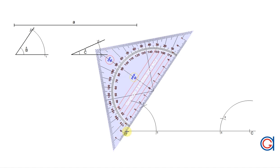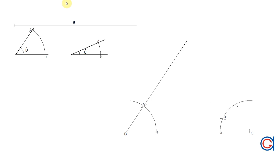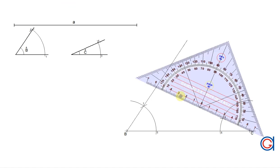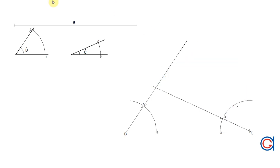Using a ruler, we draw a line from vertex B through point seven and elongate it as shown here. And finally, again using a ruler, we draw a line from vertex C through point eight and elongate it until it cuts the previously drawn line at vertex A. So now we have a triangle given one side and its two adjacent angles.